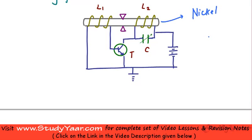We have two coils wound on this ferromagnetic material, L1 and L2. There is a variable capacitor present here and a transistor. These are the clamps which are used to keep this rod in position.